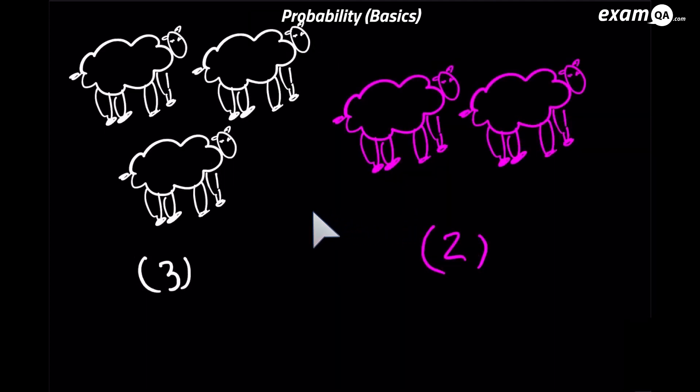Now we're going to look at a different type of question of probability. So here I've got three white sheep and two purple sheep. Now let's say I'm going to pick a sheep at random. What is the probability of me picking a purple sheep? Now, of course, there's two purple sheep.